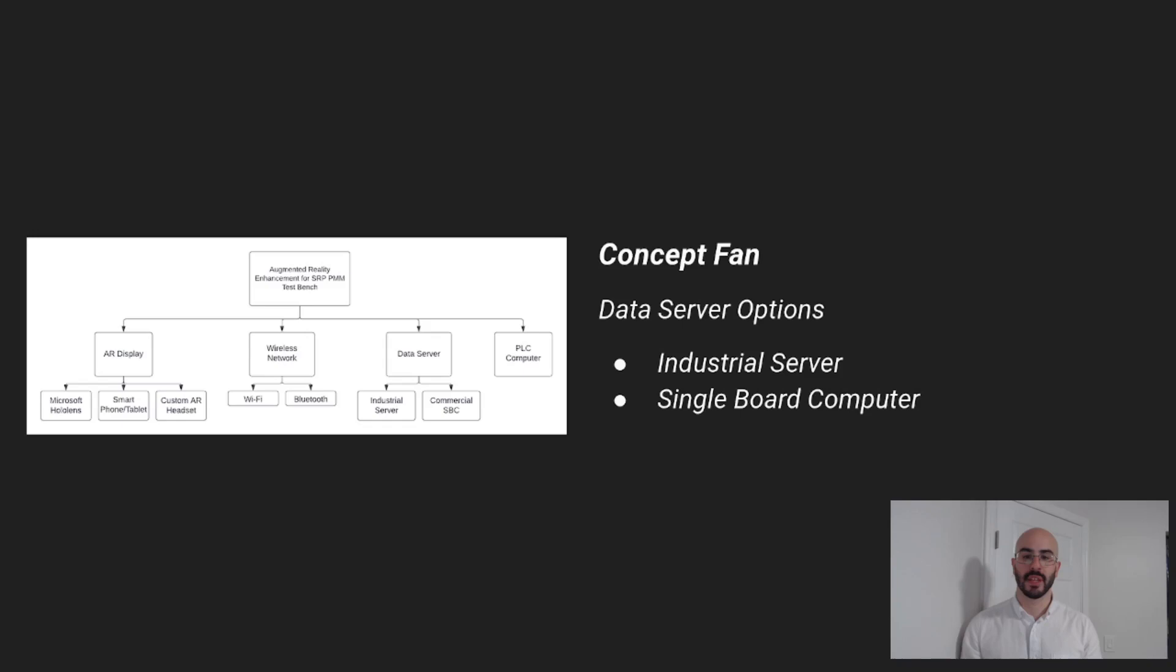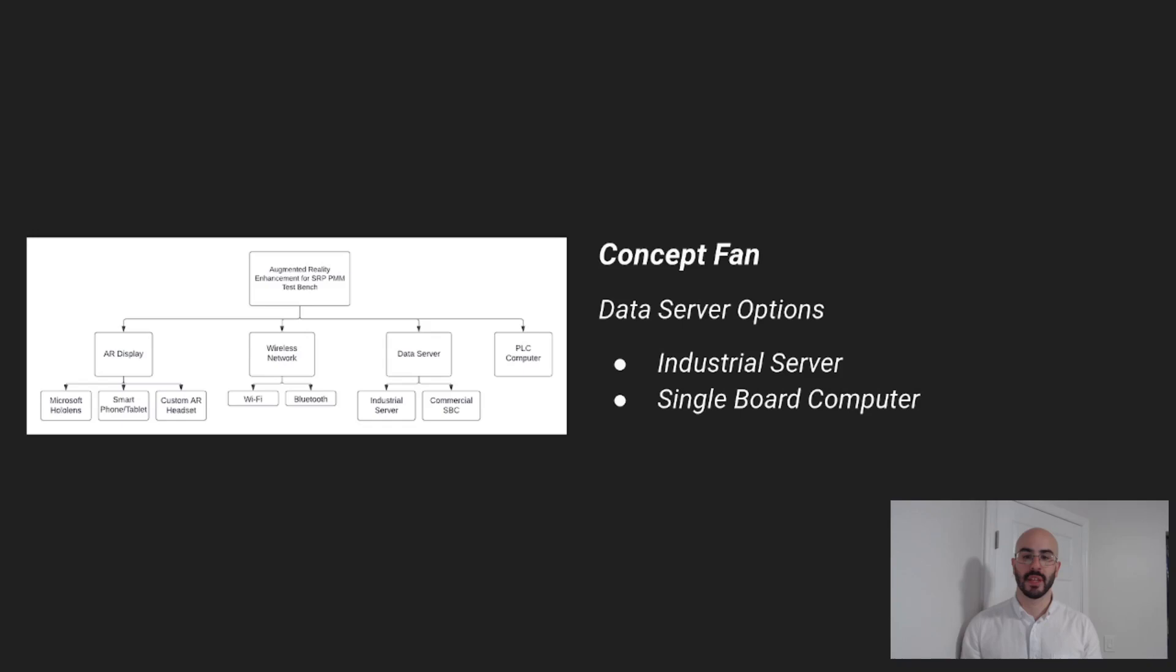In the concept selection phase, we weighted the different options and combinations and took into consideration the safety, user-friendliness, and compatibility, reliability of each of the options. We also weighed them with our constraints of cost-effectiveness, ease of implementation, and processing power. We found that the concept option that came out on top was that of using a Microsoft HoloLens using Wi-Fi as our data medium and industrial server for the main processing. Our team will go ahead and proceed with this option. Thank you.